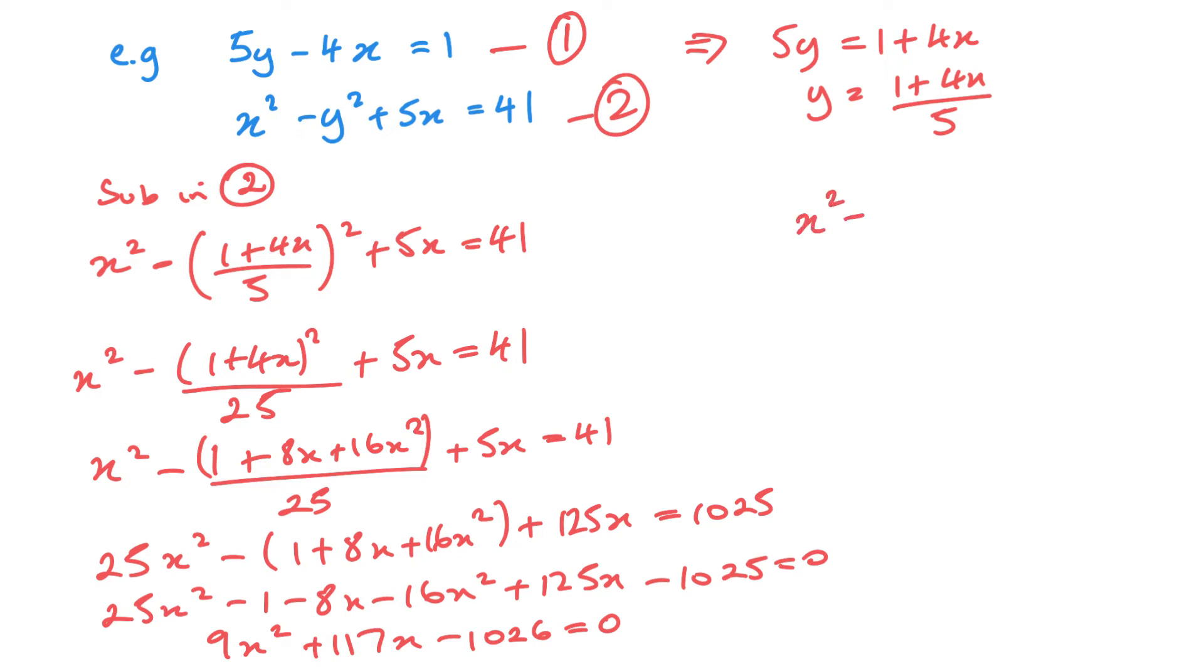So if I divide everything by 9, I'm going to get x squared plus 13x minus 114 equals 0. And this gives me minus 6 and plus 19. So x equals 6 or x equals minus 19.